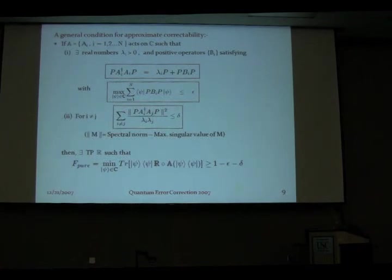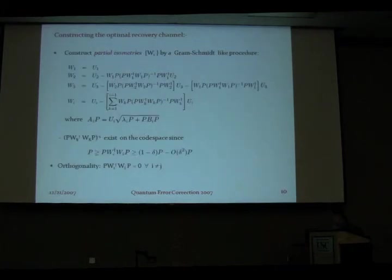Audience question: The WIs are isometries, not unitaries. Have you thought about how they would be implemented? At the end of the day, one is able to get a TPCP map, which we know is definitely implementable, though specific circuits to implement this have not yet been worked out.